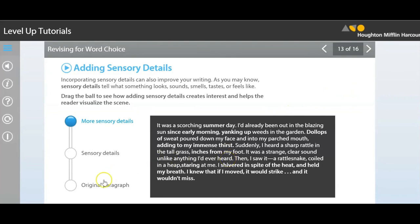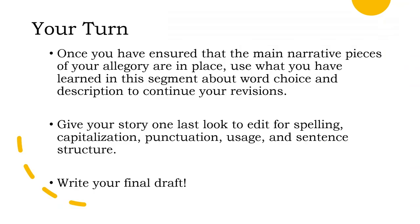This is like the process of revision — we had an original paragraph, added a few details, read through it, and saw if we could add some more. Now it's your turn. Be sure to take time to ensure that the main narrative pieces of your allegory are in place. After all, the main point is to make a political or moral statement through the use of narrative. Hopefully your pre-writing process has prepared you enough for that. Once you feel good about those pieces, use what you've learned about word choice and description to make further revisions and enhance your storytelling. Before you write your final copy, look everything over one last time through an editing lens — look for spelling, grammar, and usage errors, and remember what we learned about sentence variety and structure to make sure your writing flows clearly. Once all of that is done, write your final draft and you are finished! Good luck, happy revising and editing, and great work!